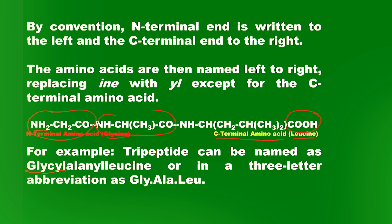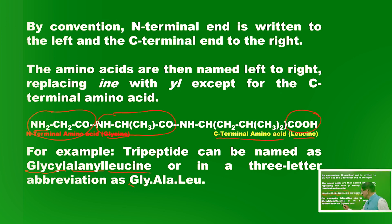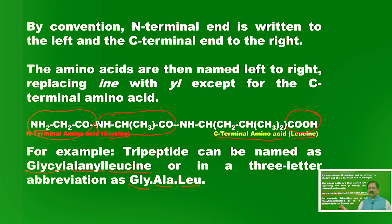This tripeptide's nomenclature: the first amino acid is glycine, so it becomes 'glycyl'; the second amino acid is alanine, so it becomes 'alanyl'; the third is leucine, which is the C-terminal amino acid so it stays as 'leucine'. The full name is Glycyl-Alanyl-Leucine. Using three-letter abbreviations: glycine is Gly, alanine is Ala, leucine is Leu — so this tripeptide is Gly-Ala-Leu.